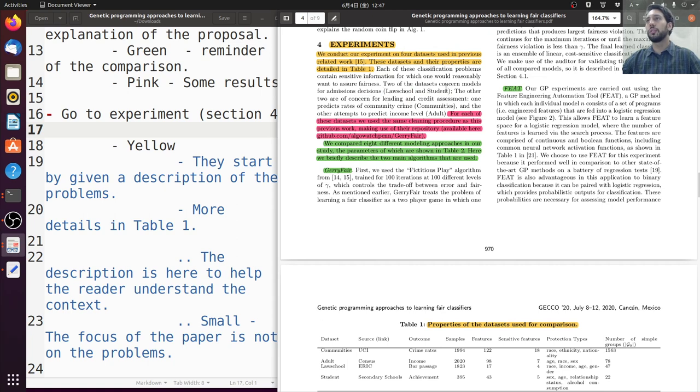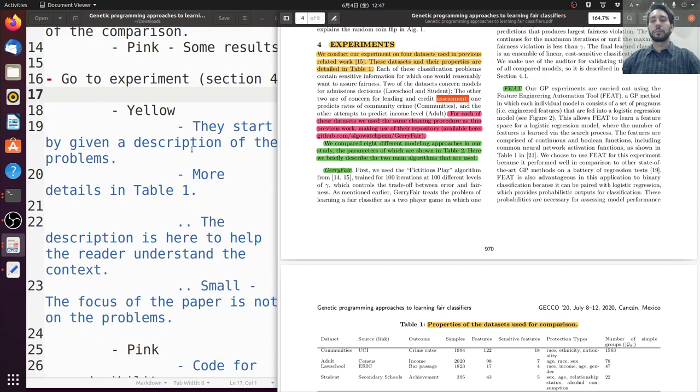So that's why they want to be fair. Two of them concern models about admission schools. So law school and student. The other two are about credit assignments. So they are also connected. So among the four, there are two groups. This is important. There is a small focus because the focus of this problem is on the methods, not on the problems.